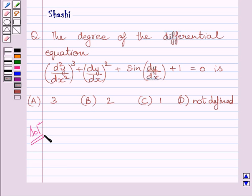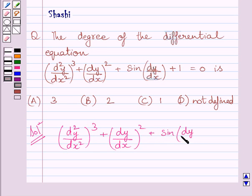Now first of all let us rewrite the given differential equation. It is cube of d square y upon dx square plus square of dy upon dx plus sine dy upon dx plus 1 is equal to 0.